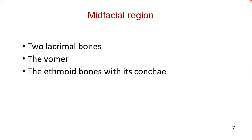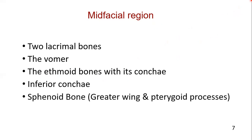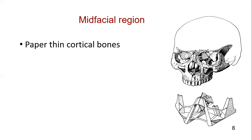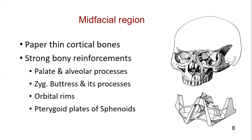The ethmoid bone with its conchae is a component of the mid-face. The superior and middle conchae are components of the ethmoid bone, while the inferior concha is a separate bone of the mid-face. The important thing about the bones of the mid-face is that these are very thin cortical bones and can be easily crumpled or broken, but the mid-face also contains strong bony reinforcement.